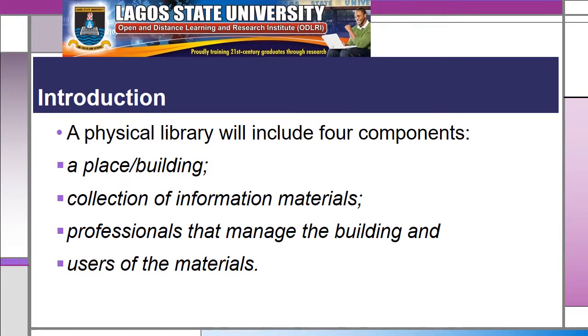A physical library will include four components: a place or building, a collection of information materials, professionals that manage the building, and users of the materials.